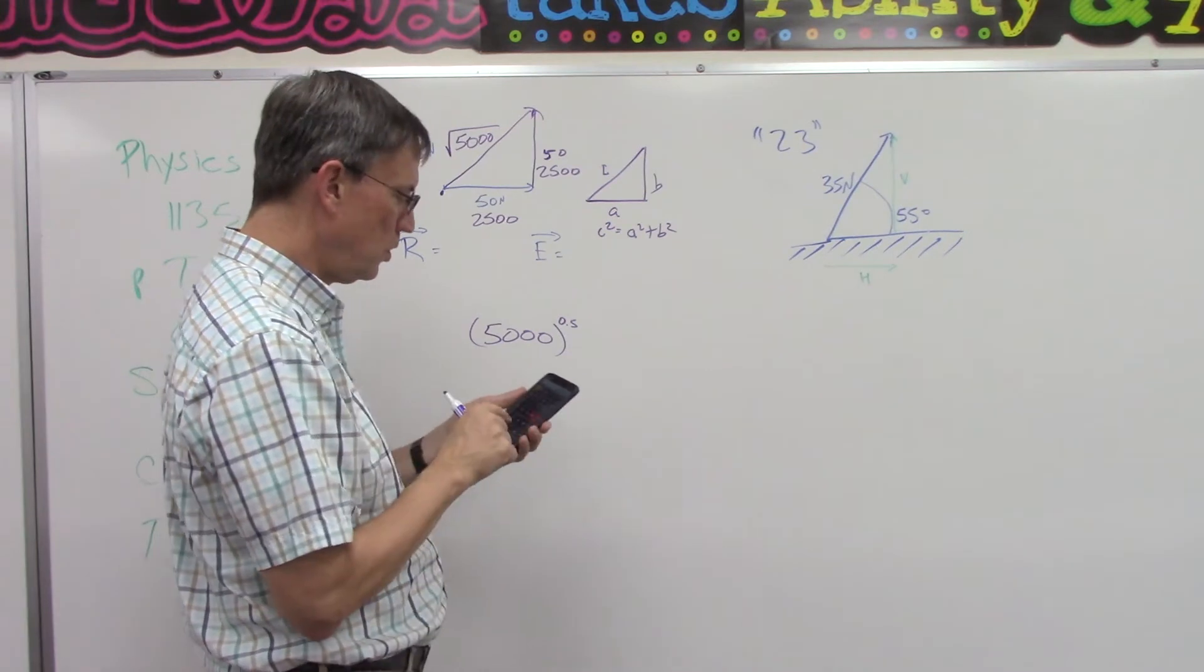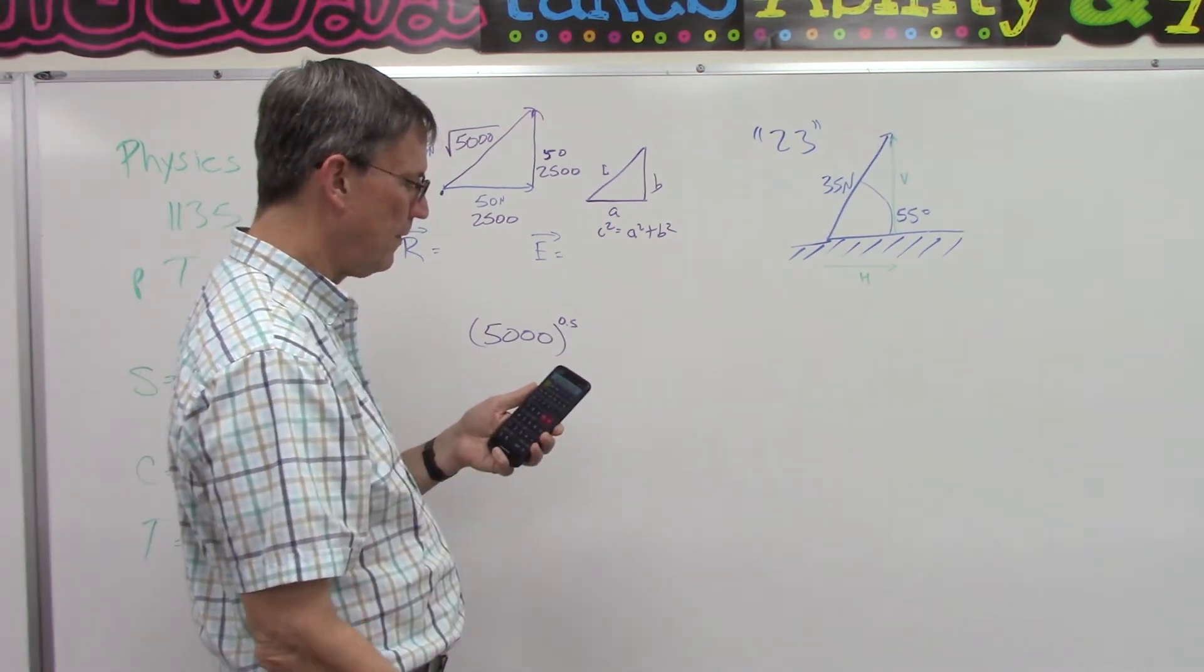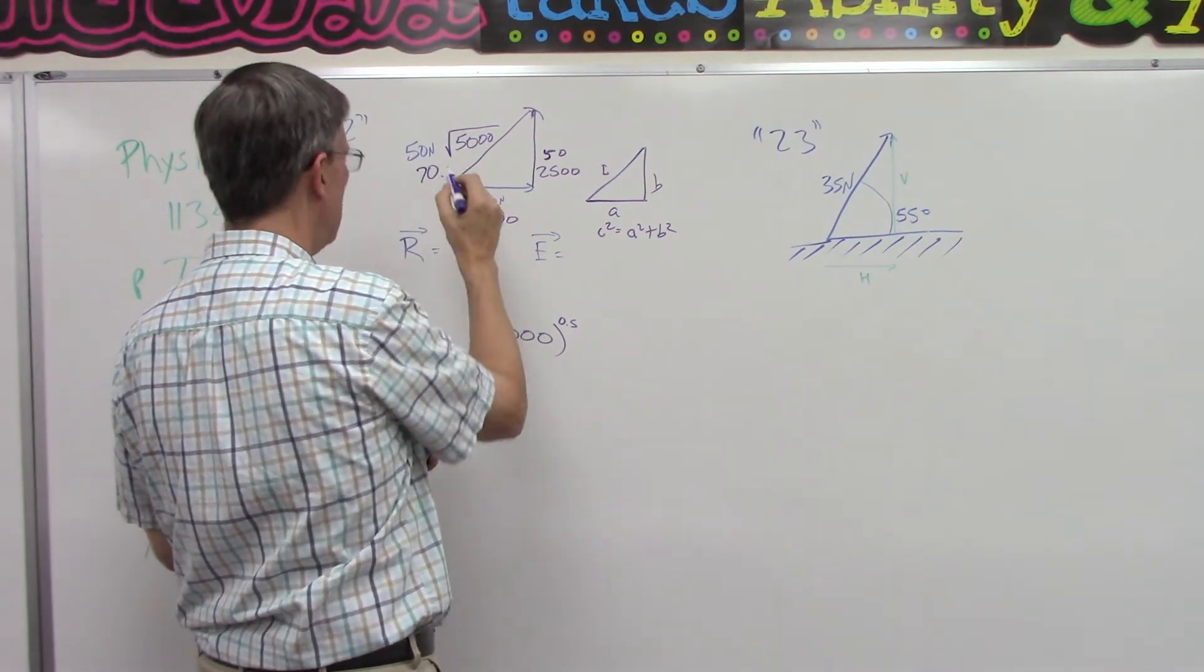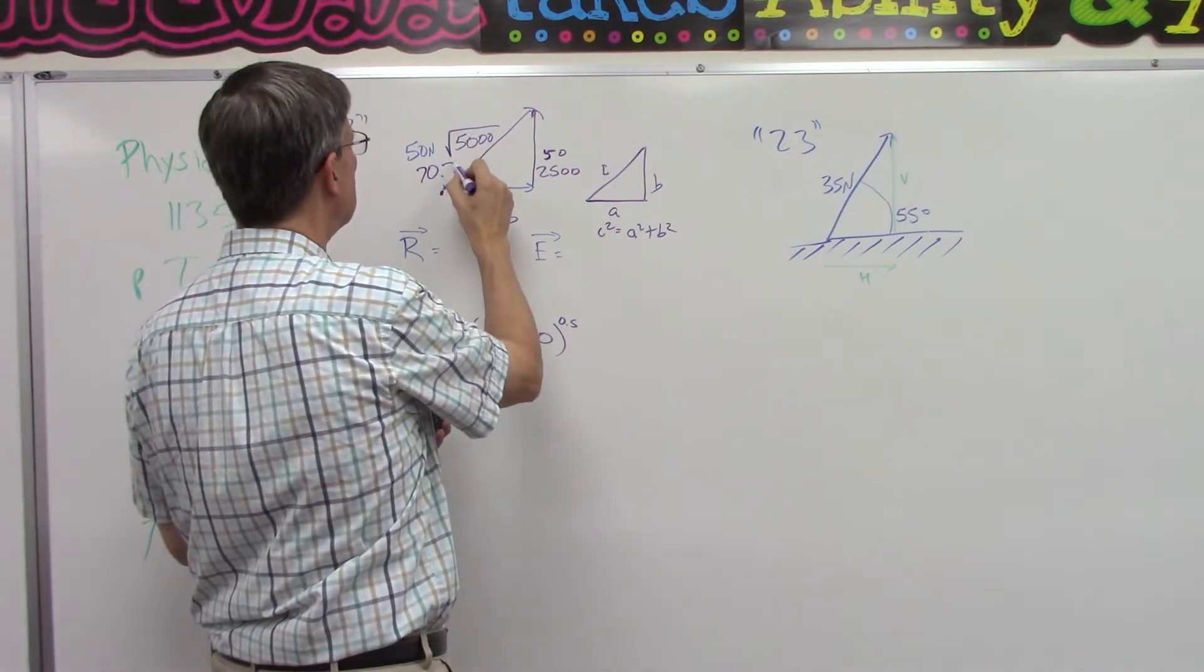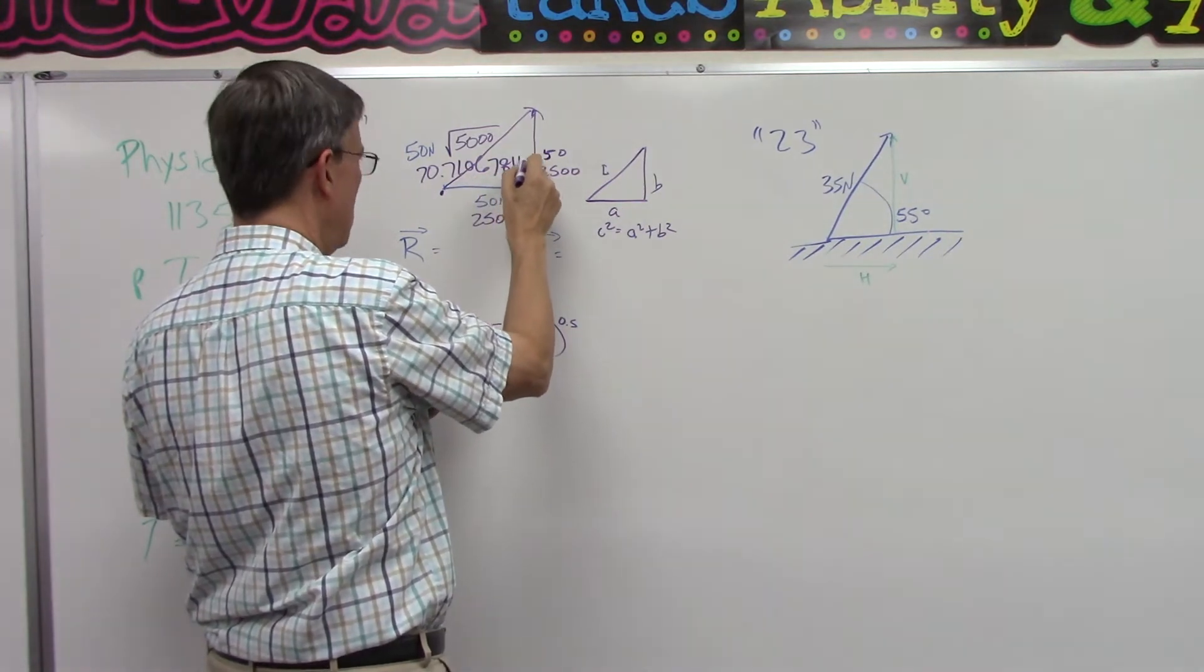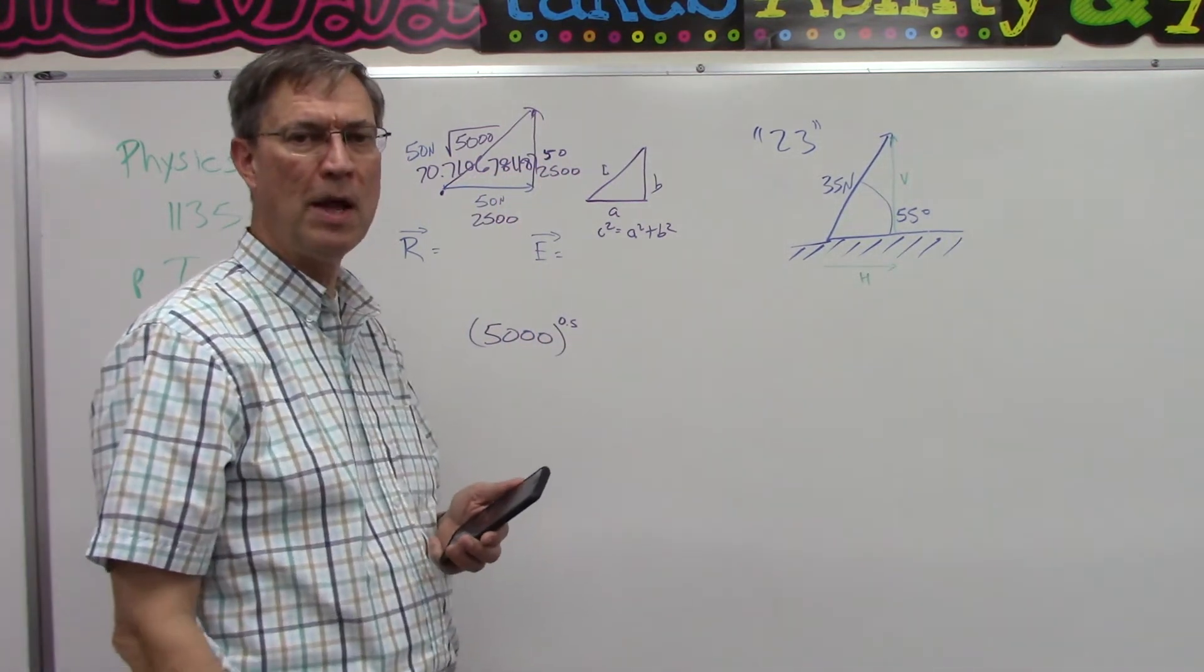So let's do the square root of 5,000. Aha! We get 70.7106781187. Oh, boy, Mr. Anger, now what?